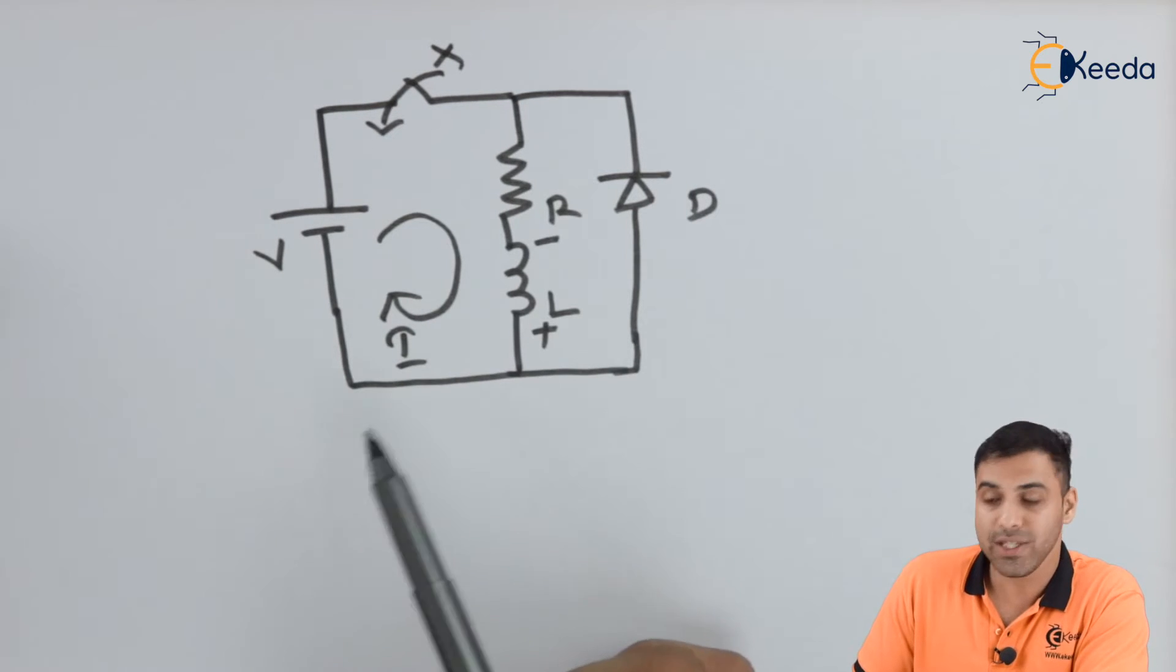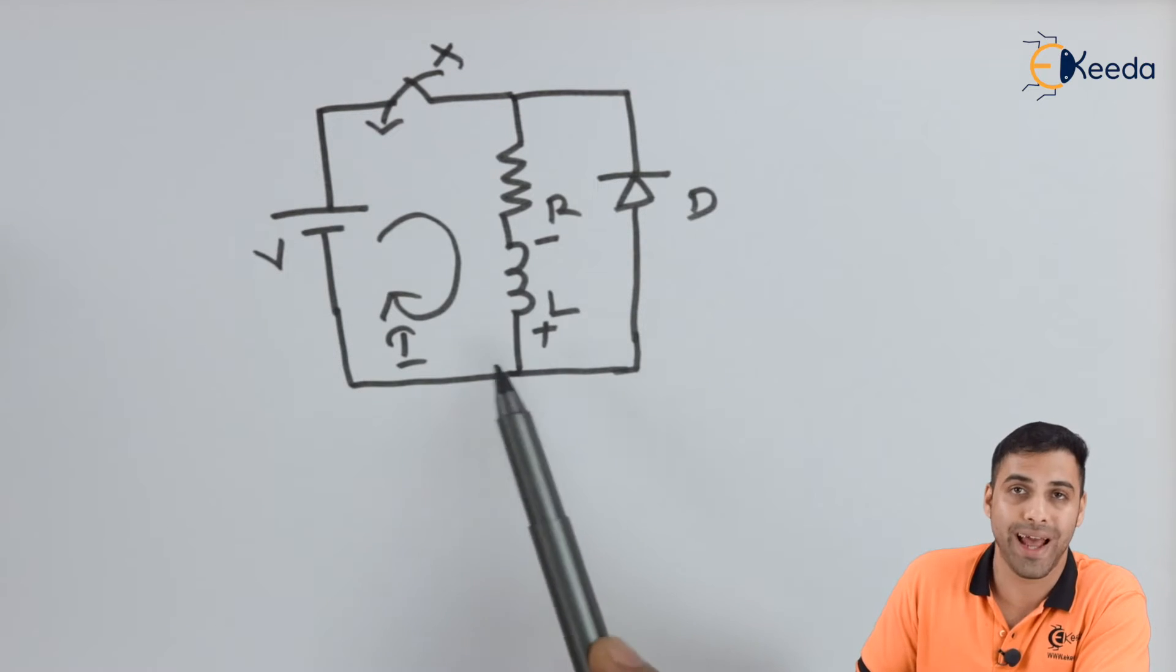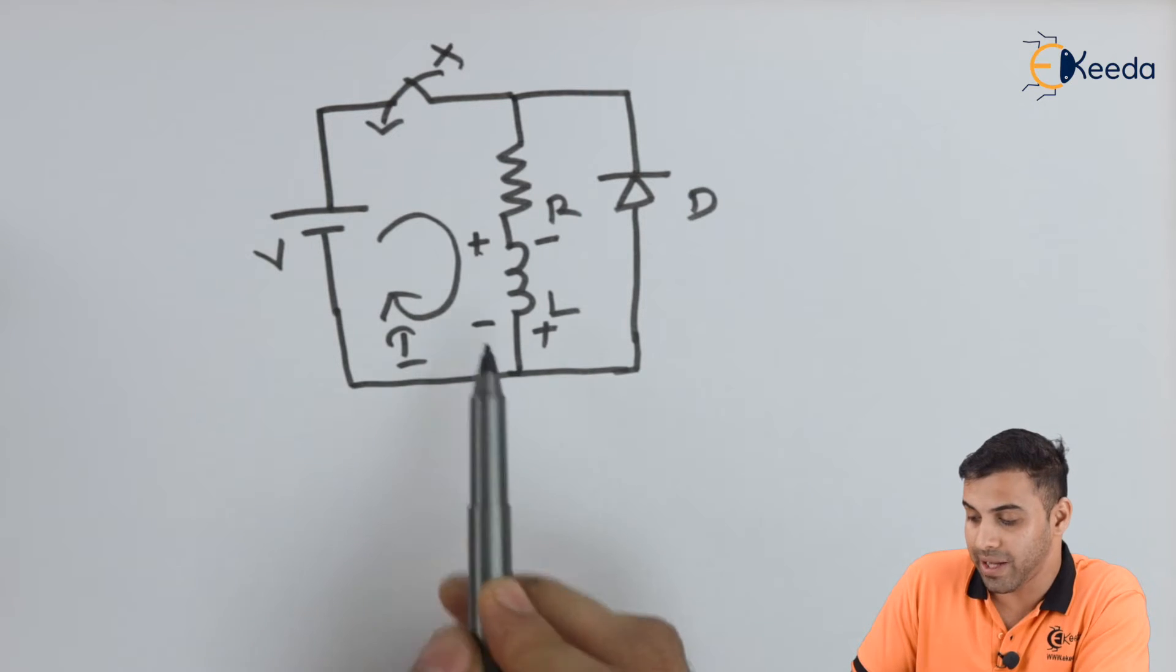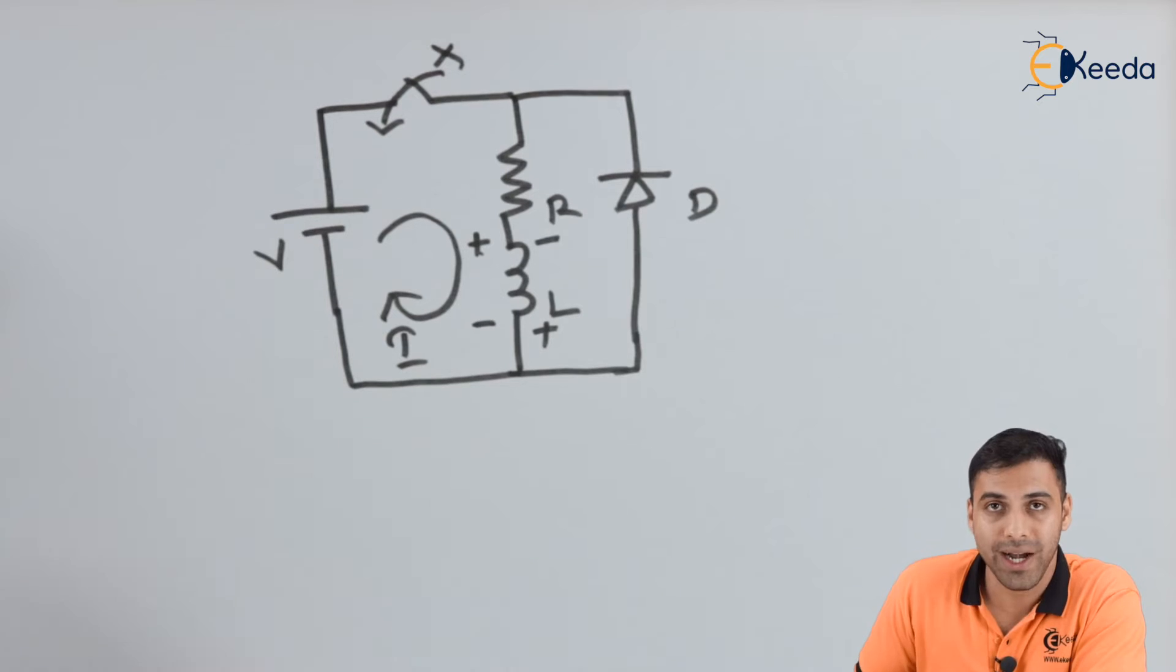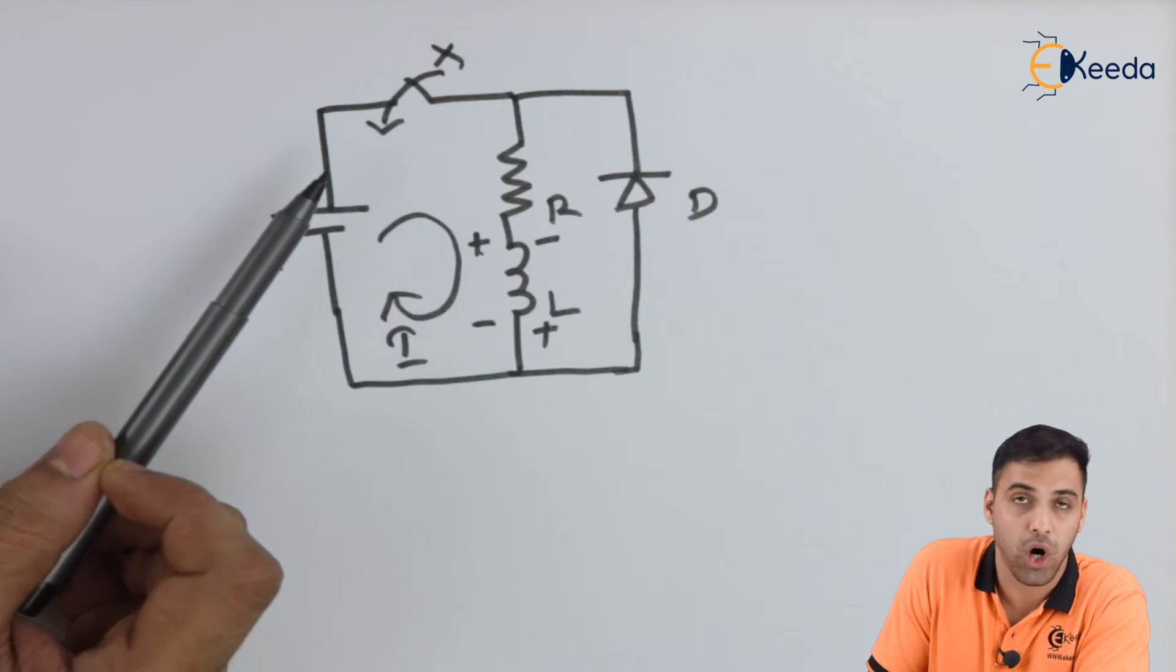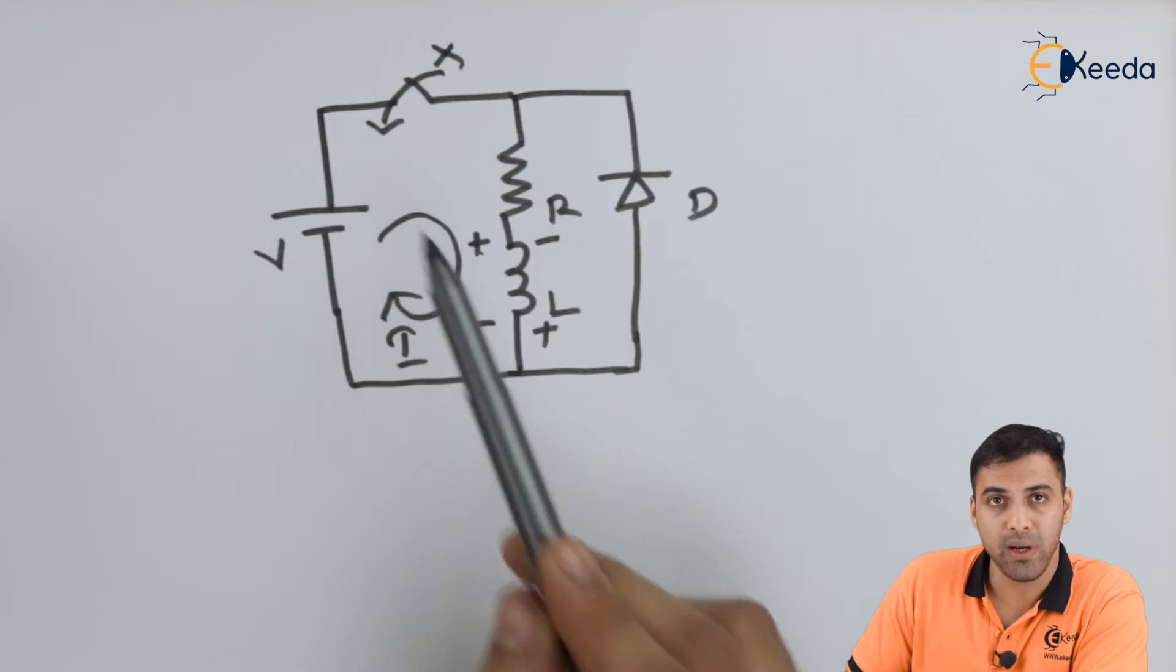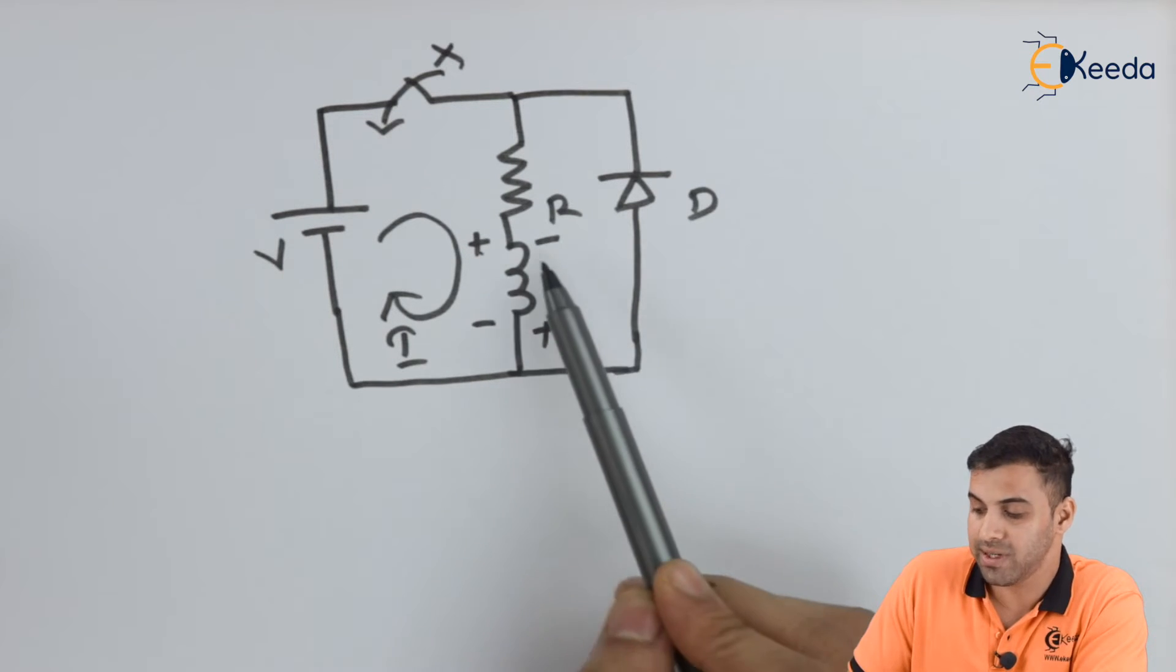However, when the switch is again turned off, the inductor changes its polarity. Because originally, the polarity was positive and negative because the current used to flow in the clockwise direction. If suddenly I switch this switch off or I keep the switch open, what happens is the polarity across the inductor changes. And this becomes plus and this becomes minus.